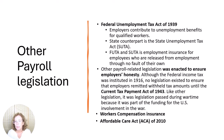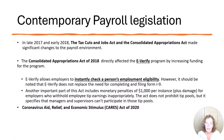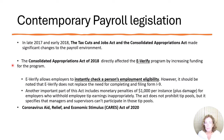The Affordable Care Act, ACA, of 2010 was one of the most significant payroll accounting changes in recent years. The primary focus of the Act was health care coverage for all Americans. However, employers have a lot of reporting responsibilities related to the Act, for instance Form 1095. In late 2017 and early 2018, the Tax Cuts and Jobs Act and the Consolidated Appropriations Act made significant changes to the payroll environment. The Tax Cuts and Jobs Act changed the tax percentages, reduced federal income tax deductions for many employees, and introduced a new Form W-4 and tax guide in 2020. The Consolidated Appropriations Act of 2018 directly affected the E-Verify program by increasing funding for the program. E-Verify allows employers to instantly check a person's employment eligibility. However, it should be noted that E-Verify does not replace the need for completing and filing Form I-9.